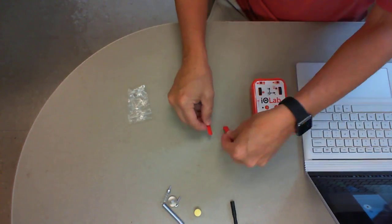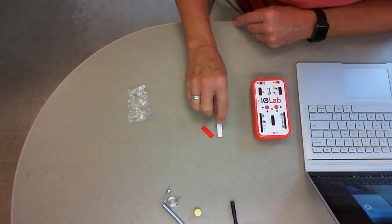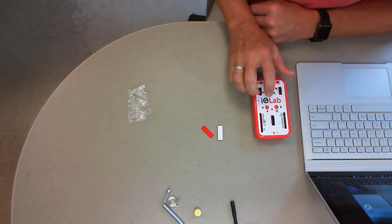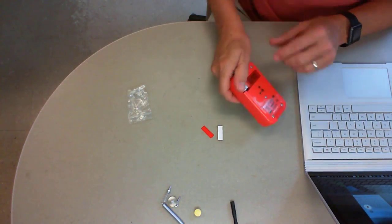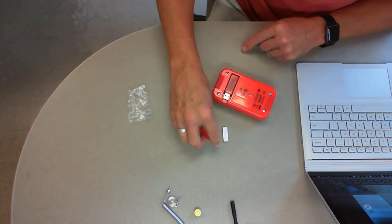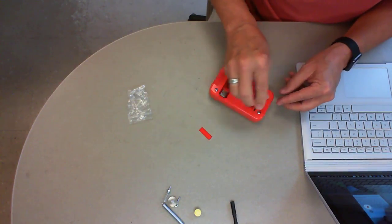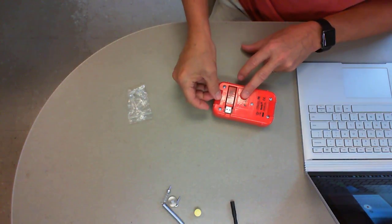Then we have two pieces of felt that have sticky stuff on the back with a protective paper cover. If you peel off the paper cover on the back of these things, you can stick these felt pads on the back of the iolab device.